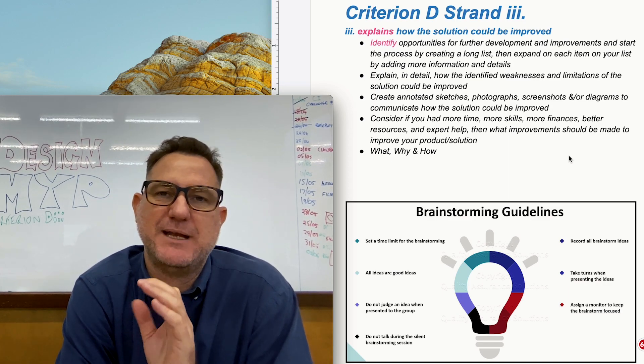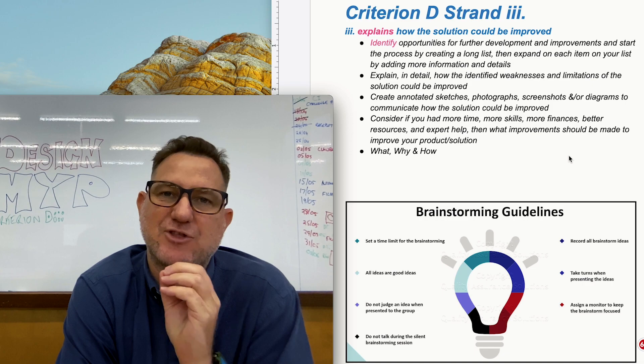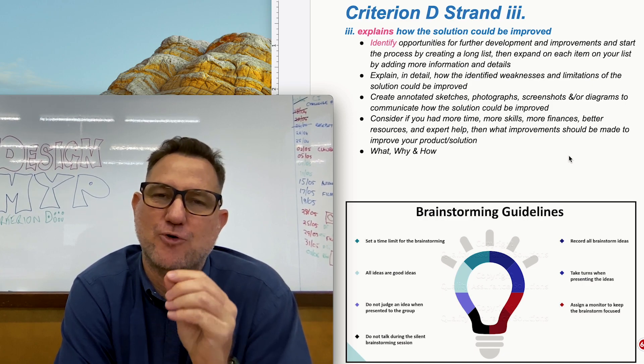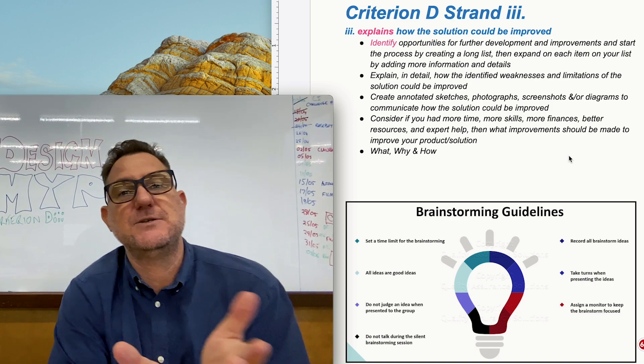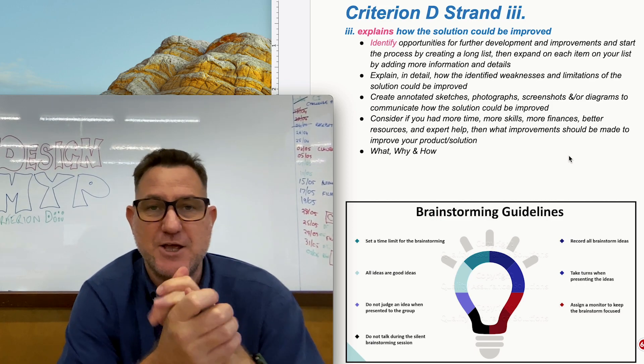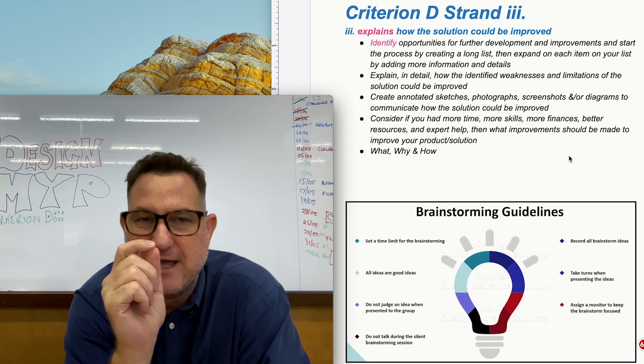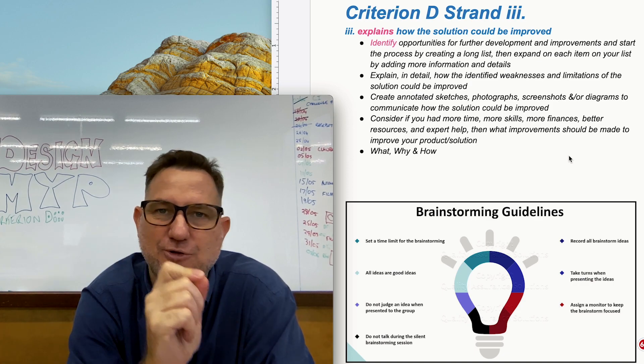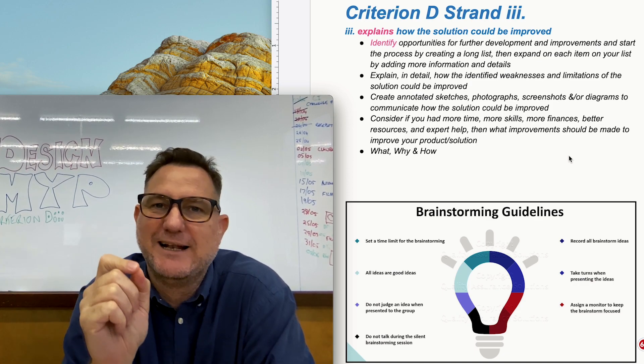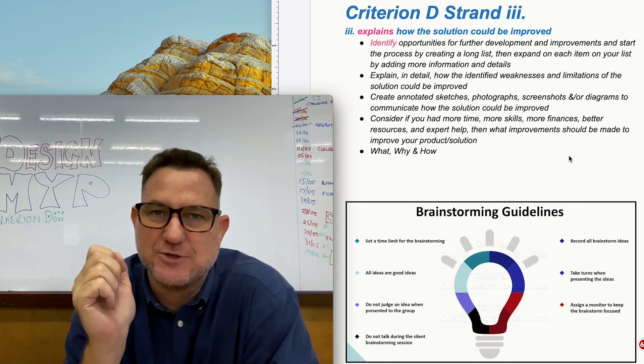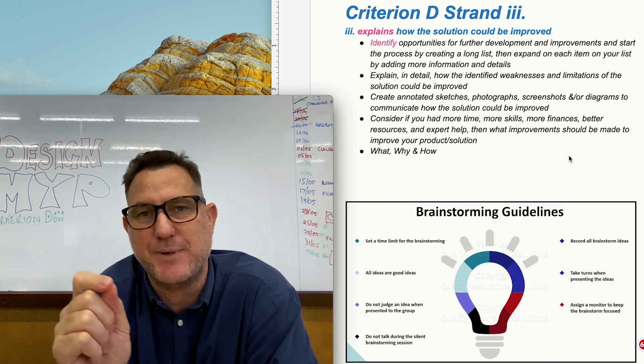no matter what it is it doesn't take much skill to actually start thinking about things that could be better or spotting problems. So this is where this process actually starts. So just start with a list, you can do like a mind map or just brainstorm this and just start identifying things that you think could be better. If you had a little bit more time or better resources or better skills what could you change to make it better?